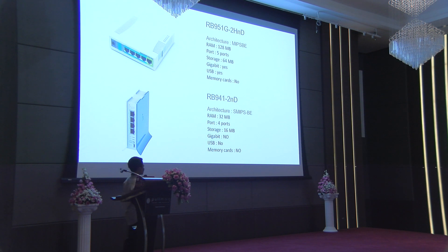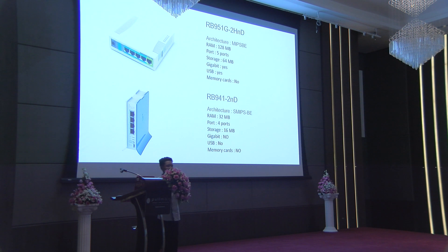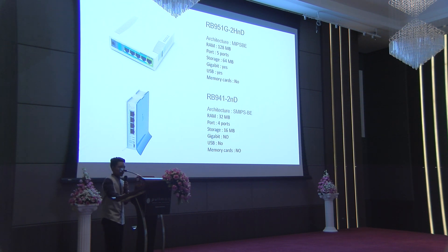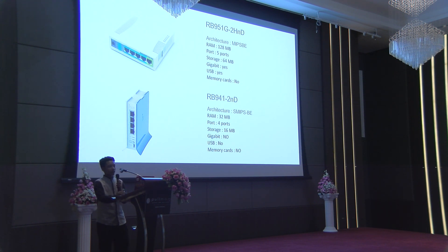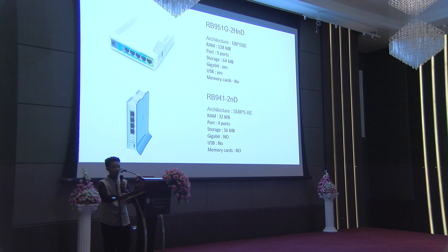We have to compare between two devices to determine which one is better to use in a school, company, or home. The RB951 has five ports and supports gigabit ethernet — gigabit can carry data up to 1000 megabits per second.